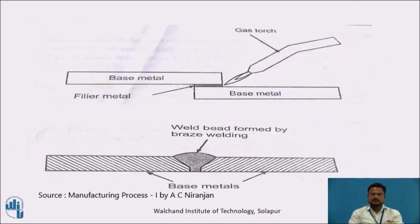In the second diagram you can see two base metals with a lap joint between them. There is a filler metal between base metal 1 and base metal 2, which is melted using the high temperature flame from the gas torch. The cross-section shows the weld bead formed by braze welding, and hence the joint takes place between the two jobs.